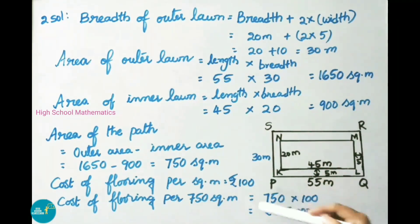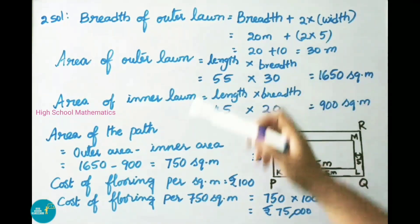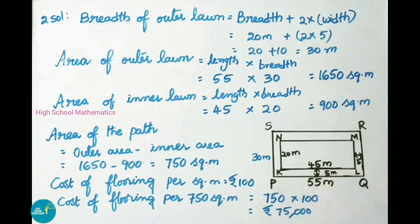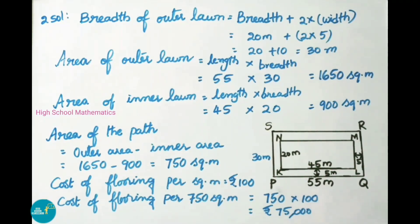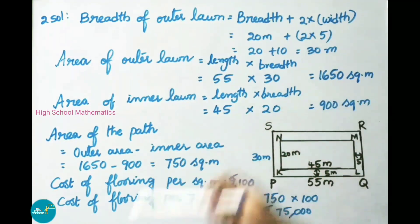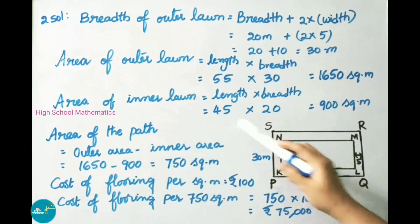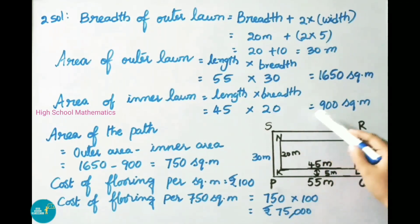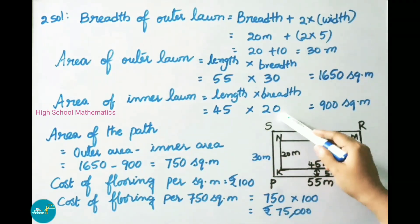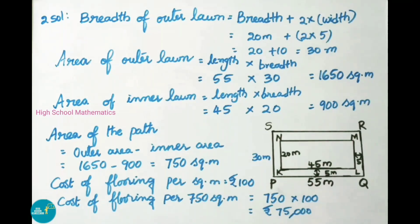Area of PQRS, the outer lawn, is in the shape of a rectangle. Formula is length into breadth, which equals 55 into 30 meters, giving 1650 square meters. Area of KLMN, the inner rectangular lawn, is also length into breadth, which equals 45 into 20, giving 900 square meters.